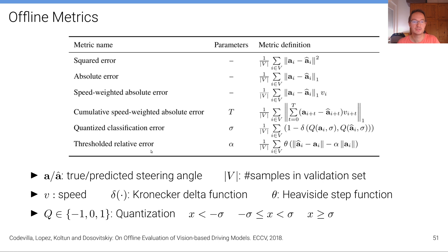And also the thresholded relative error indicated here at the bottom. So these are some of the offline metrics that people often use.